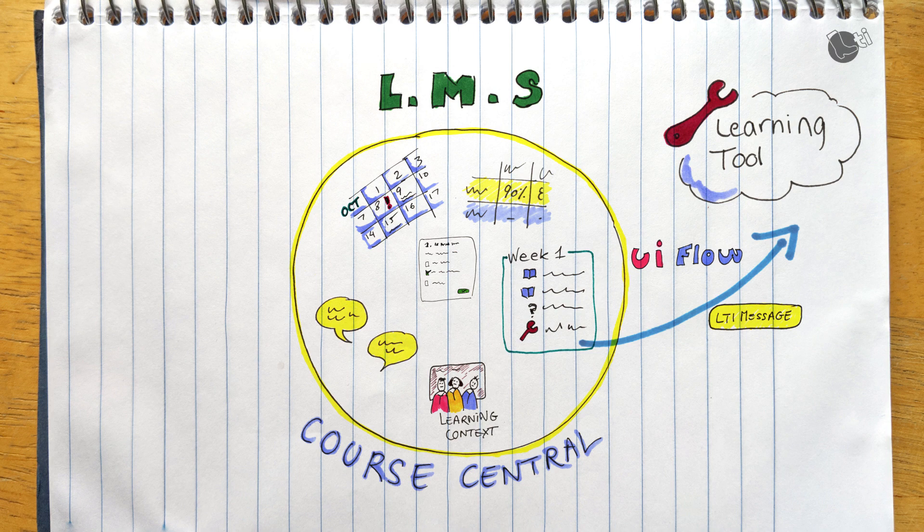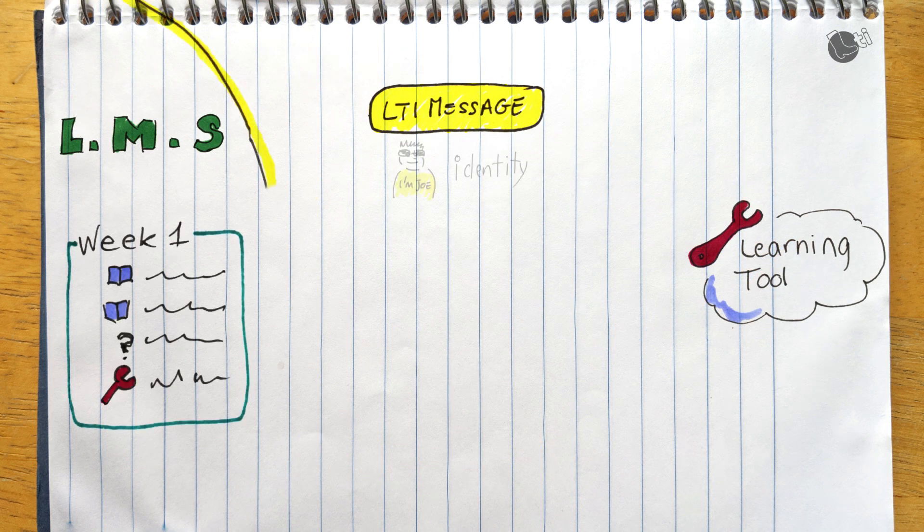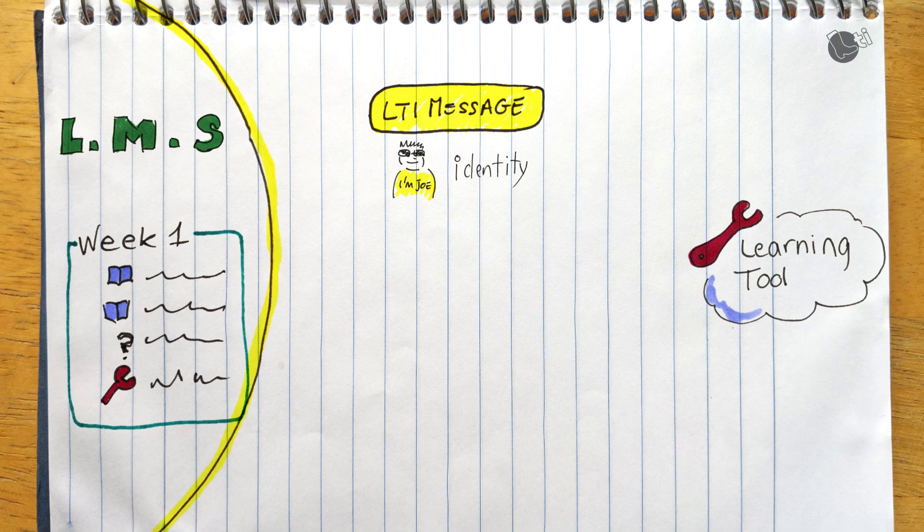So let's have a look into what's in this LTI message. The first thing you need to be able to transparently transfer from the user to the tool is identity. So LTI in that sense makes the LMS act as an identity provider, allowing some kind of single sign-on. But identity is not enough.